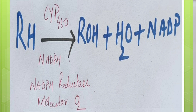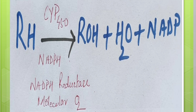So, how does cytochrome P450 work? Cytochrome P450 combines with a drug substrate in presence of NADPH, NADPH reductase and molecular oxygen to form an oxidized product. Cytochrome P450 consists of cytochrome P1, P2 and P3.